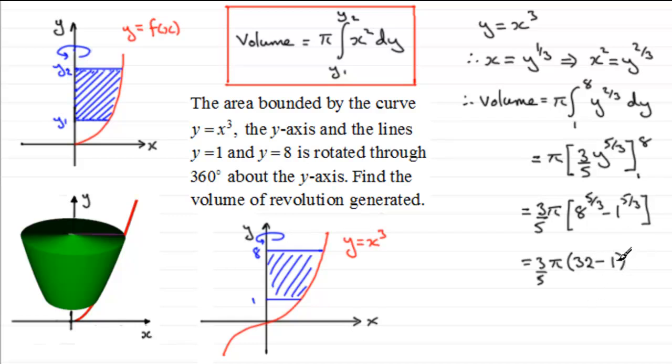Now I've got 32 take away 1 is 31. Multiply it by the 3 gives us 93. So we've got 93 pi over 5. I'd also like to put units cubed in there because it's a volume.